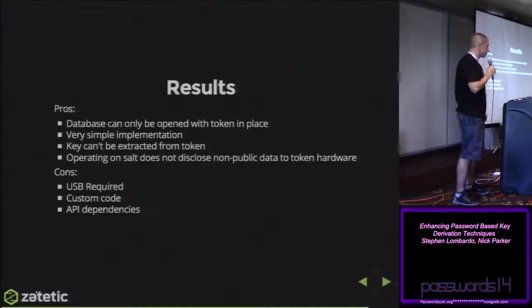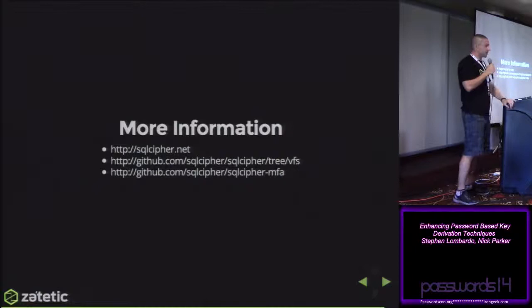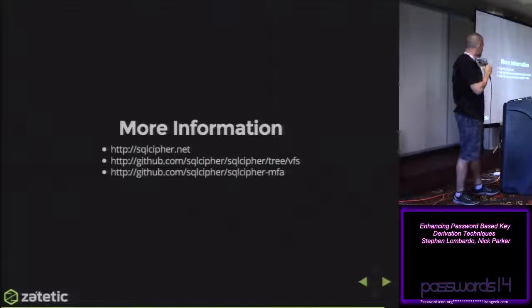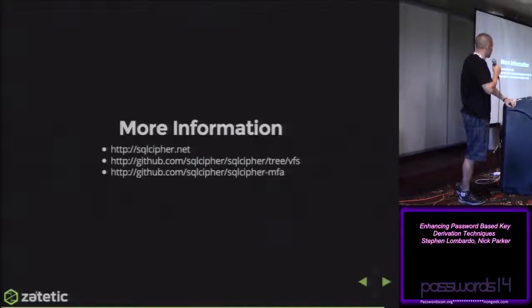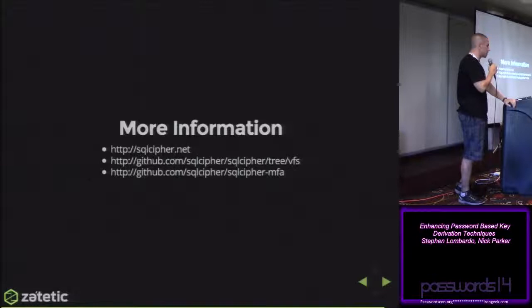That pretty much covers the multi-factor section. SQLCipher.net is the website for SQL Cipher, which is an open source project — you can go to GitHub and check it out. All of the work related to adaptive key derivation is on a branch called VFS, related to the virtual file system we implemented to store the adaptive key derivations. Sample code for the multi-factor encryption is available under the SQLCipher MFA repo.